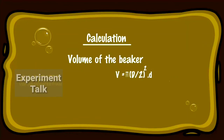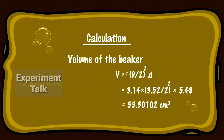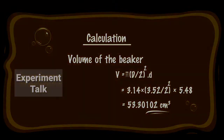Volume of the beaker V is equal to π × (D/2)² × depth. That is equal to 3.14 × (3.52/2)² × 5.48, which is equal to 53.30102 cm³.